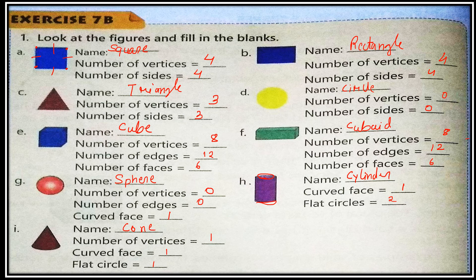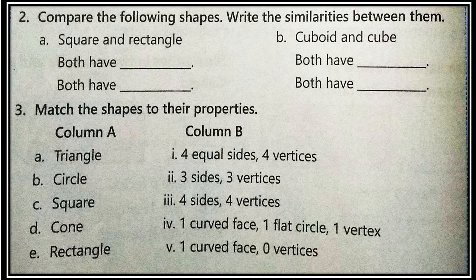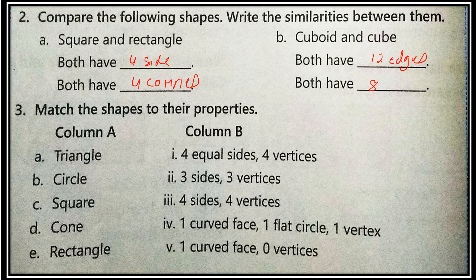You have to learn these — we will discuss more in online classes. Now compare the shapes and write the similarities. Square and rectangle: both have four sides and four corners. Cube and cuboid: both have twelve edges and eight corners or vertices.